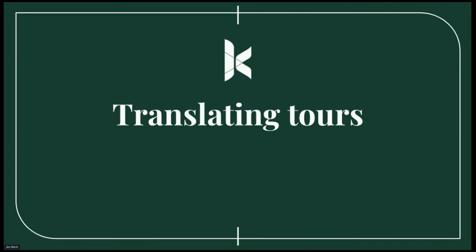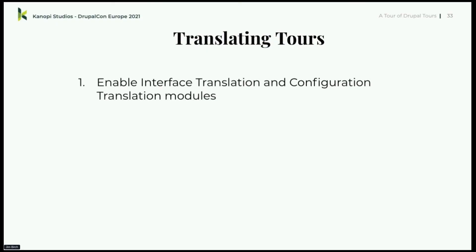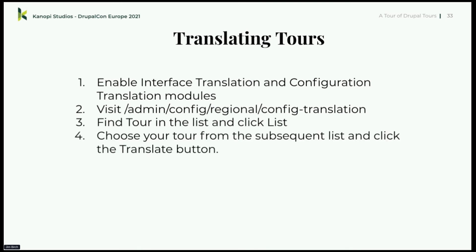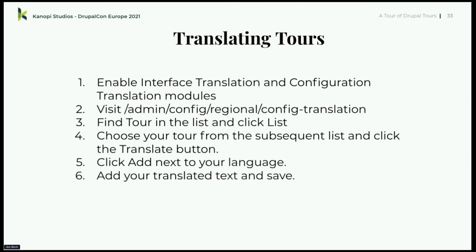Translating tours — every tour has a language, so you can do it one of two ways. You could use Tour UI and create a completely new config in Spanish versus English, or you could do it through the translation interface: enable the interface and configuration translation modules, visit config translation, find your tour, click the translate button, add your language, change the tour content, and save. You'd have a brand new config for that tour. Then visit the routes, switch languages, and verify everything worked as expected.